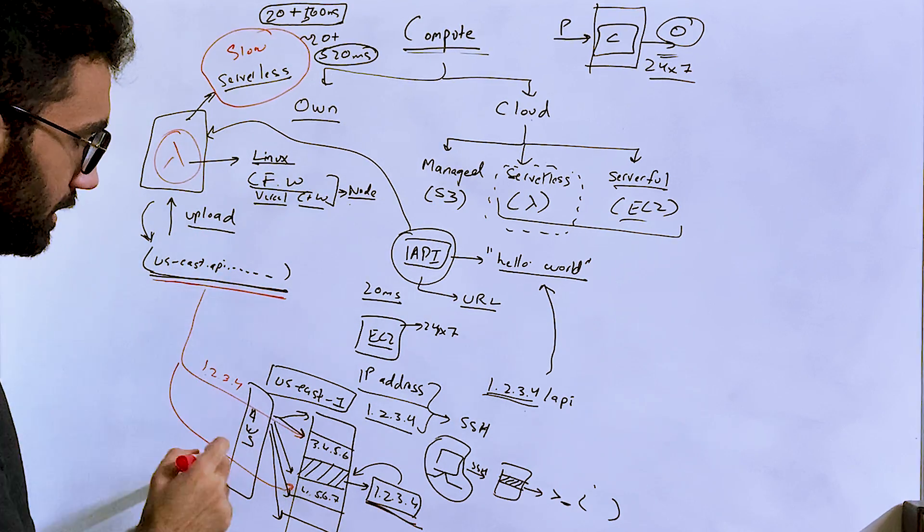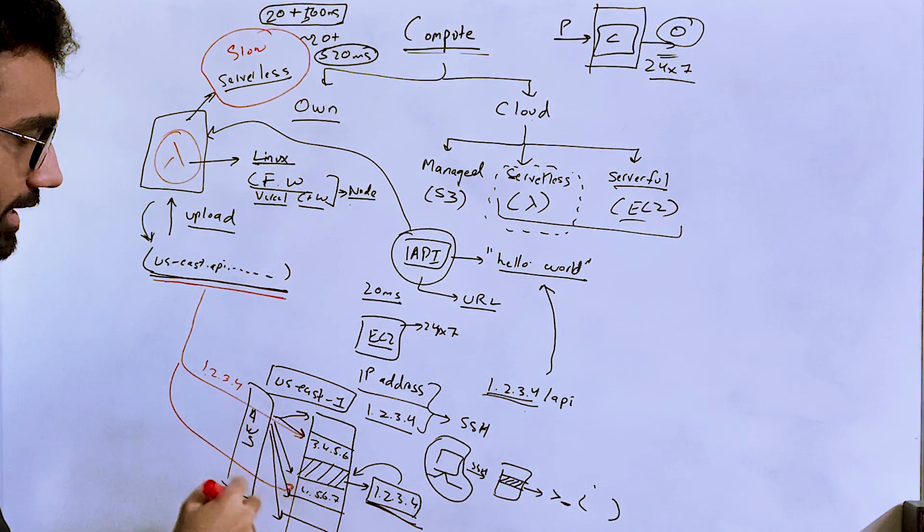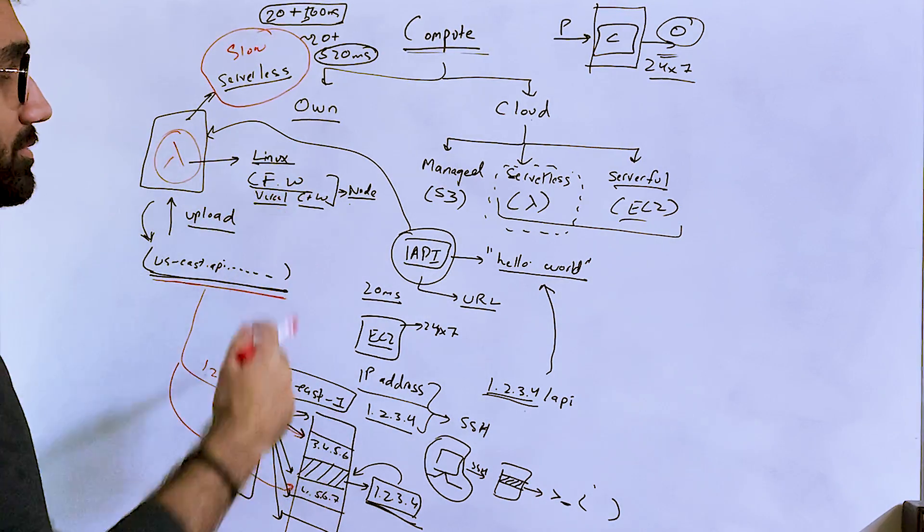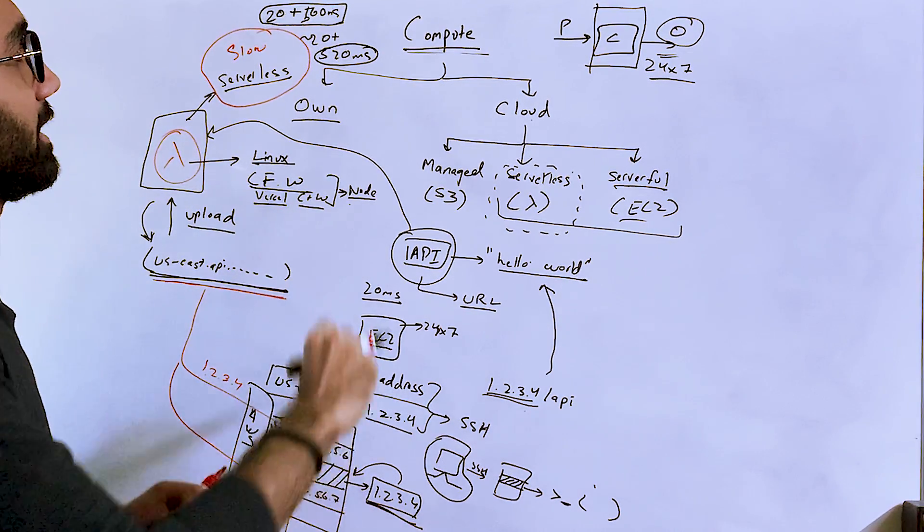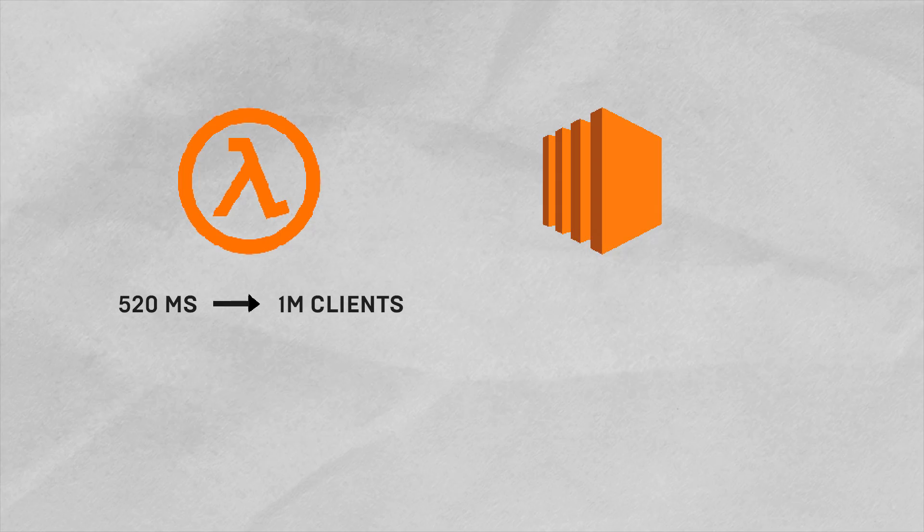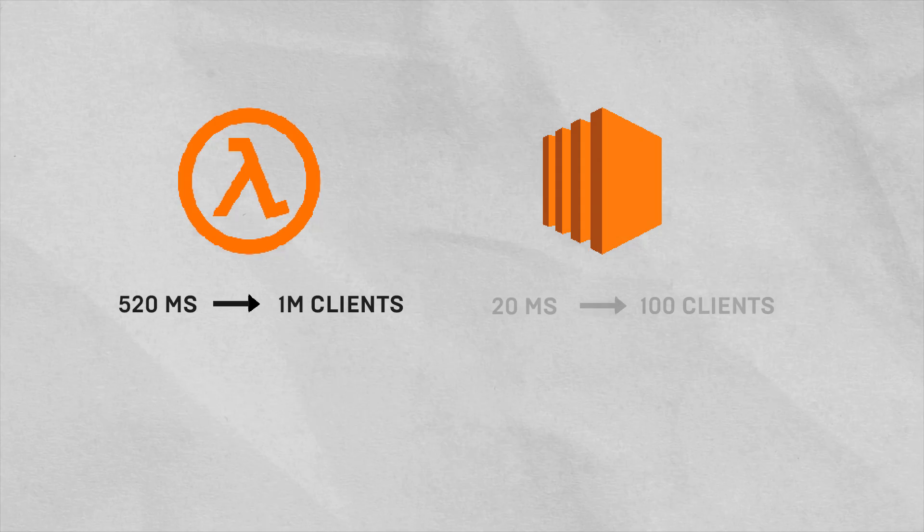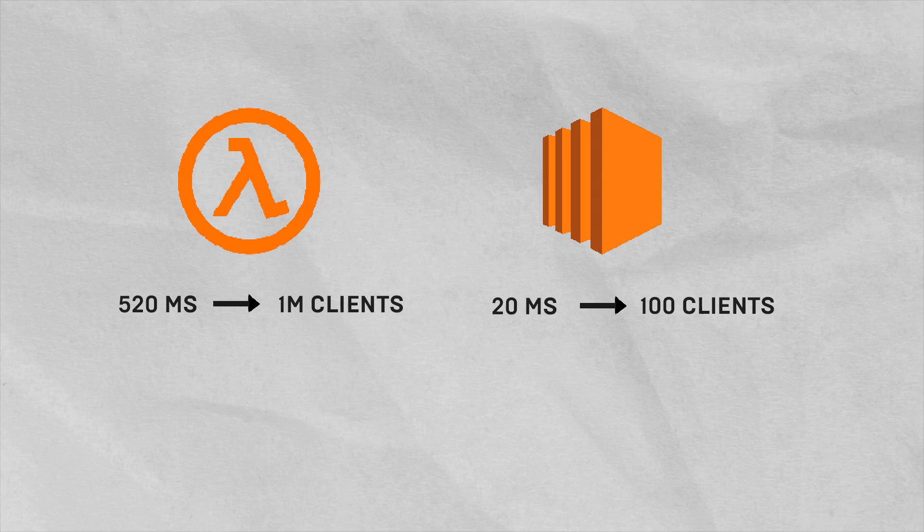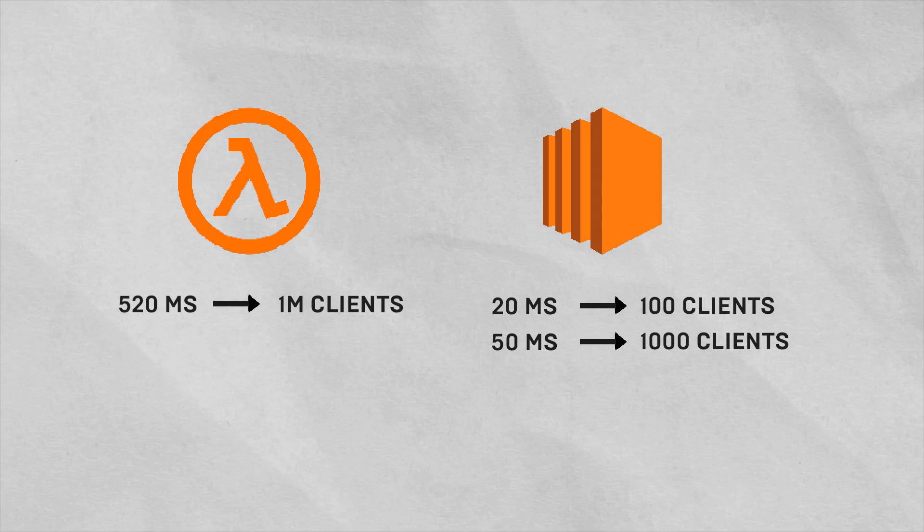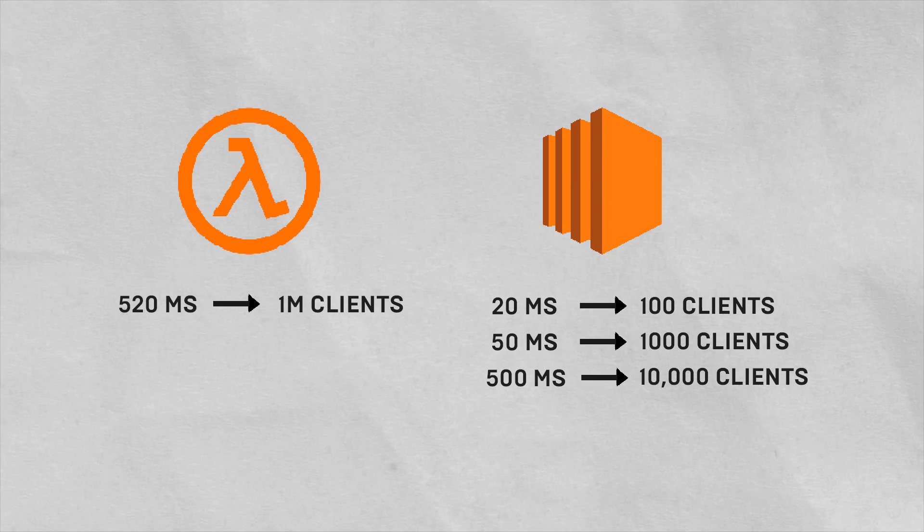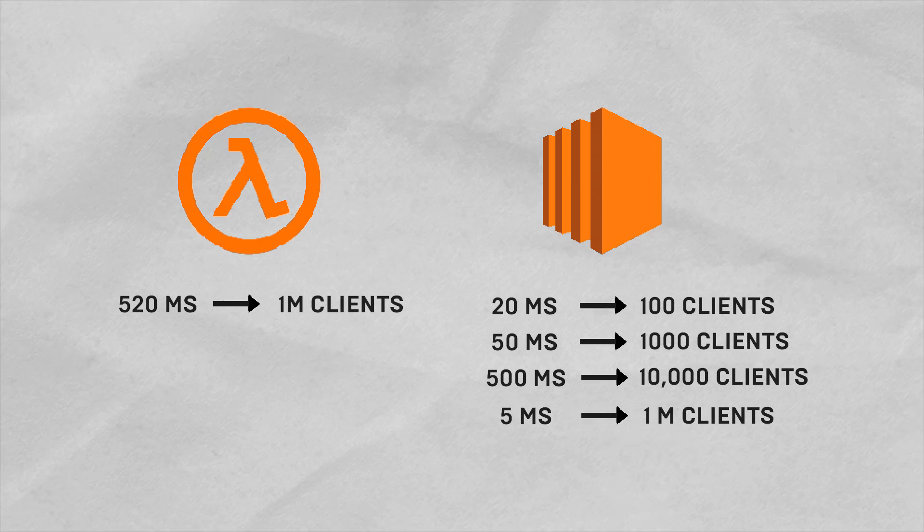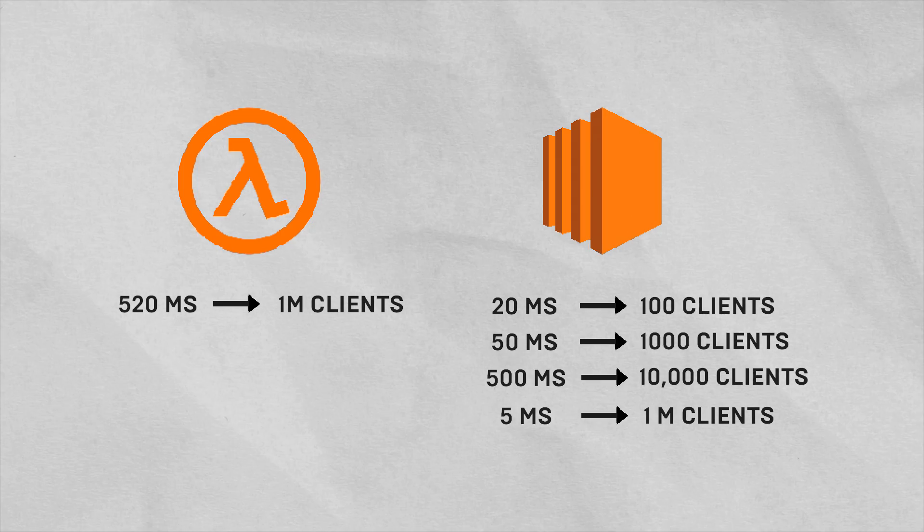Because like I mentioned, AWS can properly load balance it and allocate it into different compute instances and run a lot of these code instances parallely. So you basically get 520 for a million clients compared to, in this case, in EC2, you get 20 milliseconds for first hundred clients, then 50 milliseconds for the next thousand clients and then 500 milliseconds for the next 10,000 clients and then five seconds for the next million clients. So you see the drop-off here.